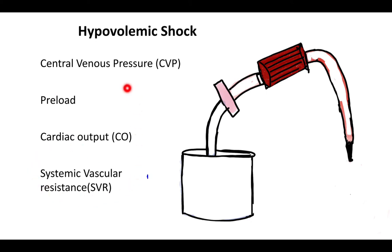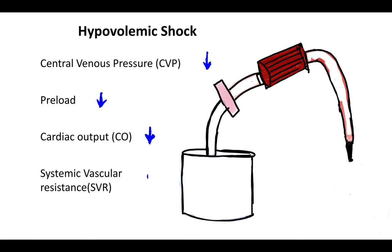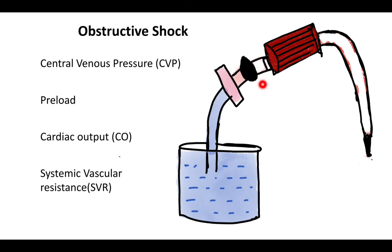We now have all parameters: CVP from a central venous catheter, preload from echo or pulmonary artery wedge pressure, cardiac output from stroke volume times heart rate via echo, and SVR by calculation. In hypovolemic shock, there is no blood in the venous pool, so CVP is low, preload is low, cardiac output is low, and SVR is high due to sympathetic stimulation and vasoconstriction.